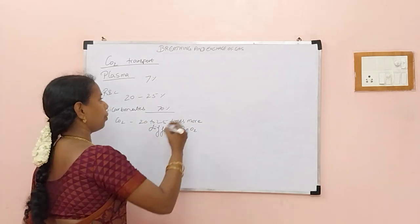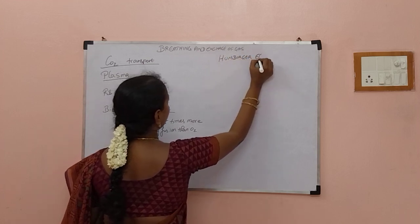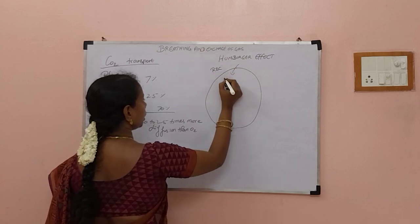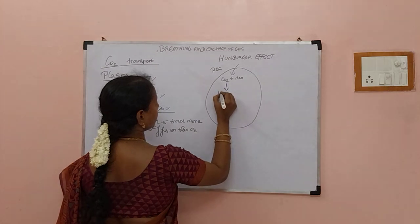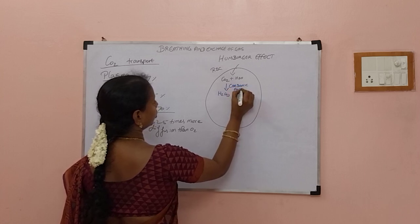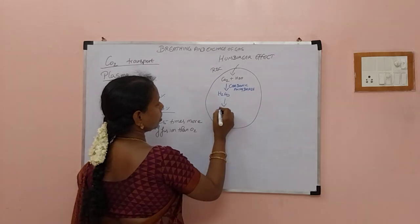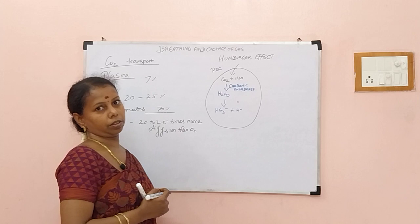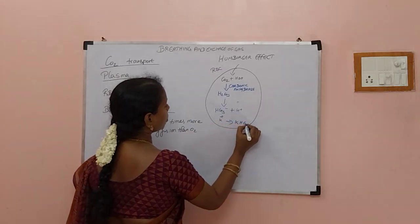Let us see how bicarbonates are formed — this is called the Hamburger effect, named after the scientist who studied it. Inside the RBC, carbon dioxide enters and combines with water to form carbonic acid (H2CO3) in the presence of the enzyme carbonic anhydrase. This carbonic acid is then converted into bicarbonate. The bicarbonate in RBC combines with potassium to form potassium bicarbonate.